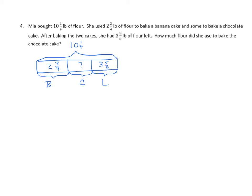Now this is very similar to things that we've done in the past. We can either take 10 and 1 ninth and subtract 2 and 3 fourths, then subtract 3 and 5 sixths. Or we can take 10 and 1 ninth and subtract the sum of 2 and 3 fourths and 3 and 5 sixths.